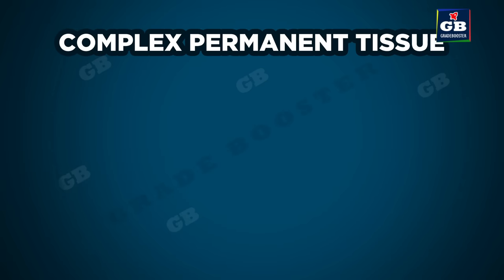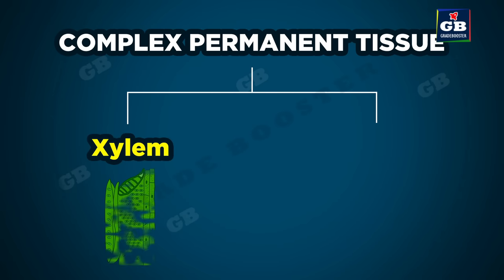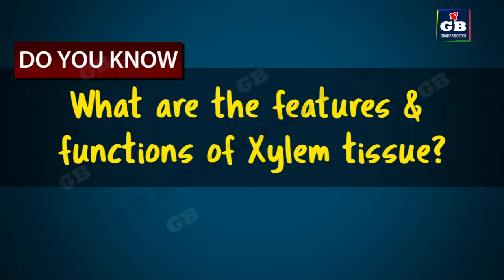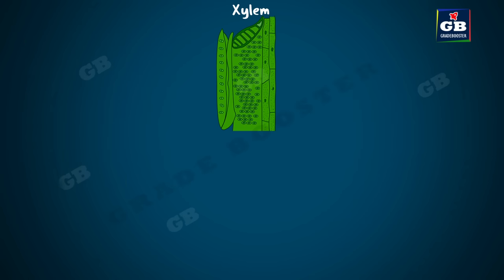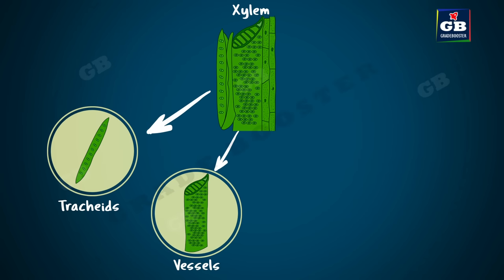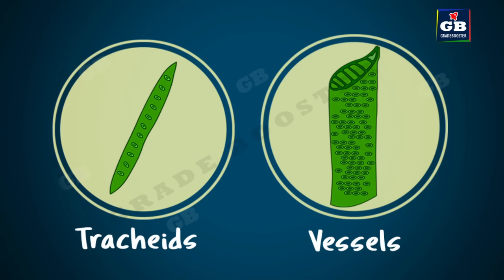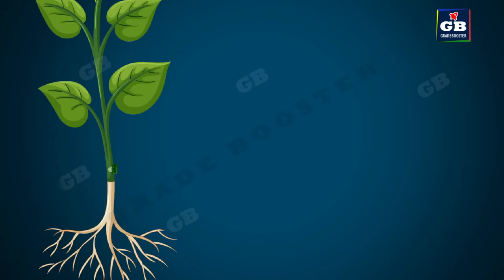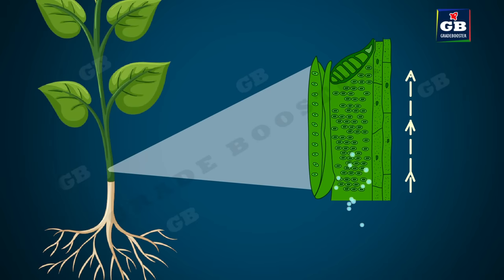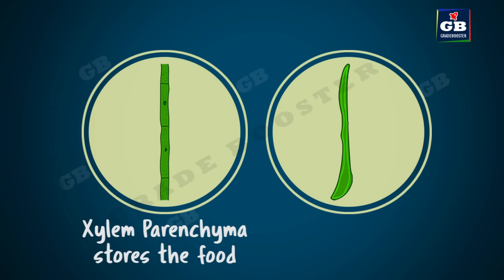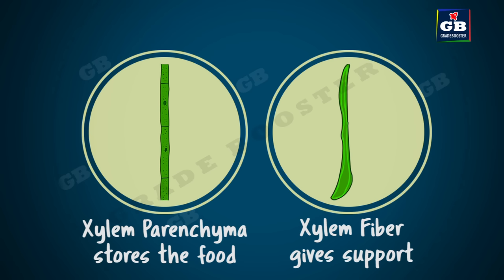Xylem consists of tracheids, vessels, xylem parenchyma, and xylem fibers. Tracheids and vessels are tubular structures with thick cell walls. When these cells mature, they become dead cells. Xylem tissue transports water and minerals from roots to different parts of the plant. Xylem parenchyma stores food and xylem fibers give support to the plant.